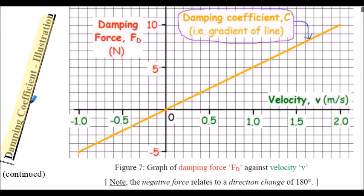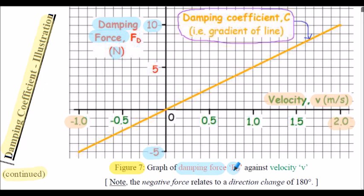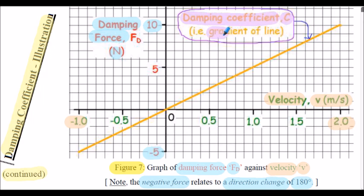Here's the damping coefficient illustration continued. Velocity is plotted on the horizontal axis in meters per second, ranging from negative 1 to positive 2, and on the vertical axis the associated damping force in newtons ranges from negative 5 to 10. Figure 7 is a graph of damping force Fd plotted against velocity V. Note that a negative force relates to a directional change of 180 degrees — for our linear damper, a positive force may be a movement from left to right, and a negative force from right to left. Notice also that the damping coefficient C is actually the gradient, or slope, of the line.